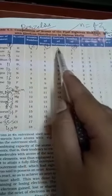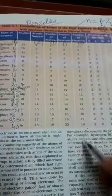1 minus 1, number of neutron is 0. 4 minus 2, 2. 7 minus 3, 4. 9 minus 4, 5. 11 minus 5, 6. In this way, you can find the number of neutrons.